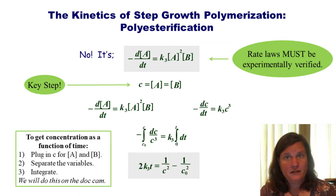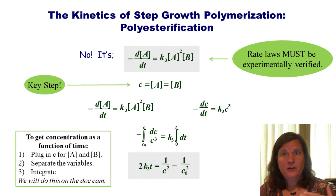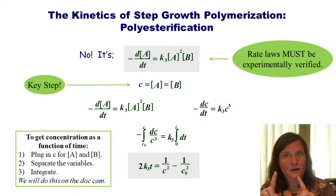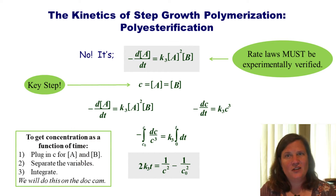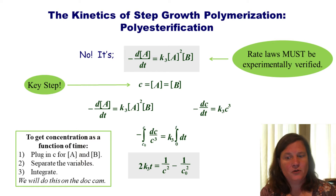Now we get to our second key assumption, and if we don't do this step we cannot solve this rate law. To get the highest molecular weight polymers, the acid concentration and the alcohol concentration have to be exactly equal. So at t = 0, the concentration of acid groups equals the concentration of alcohol groups. Every time we react an acid group, we react an alcohol, so these concentrations stay equal throughout. We set them both equal to C, and we go from a rate law we can't separate and integrate to one we can readily solve.